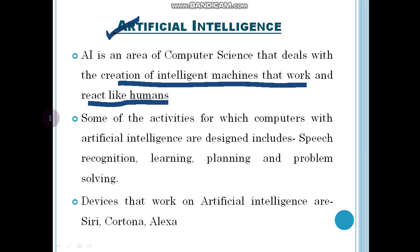That is the field of computer science known as artificial intelligence. For example, robots are machines that can react like humans through programmed knowledge-based data.